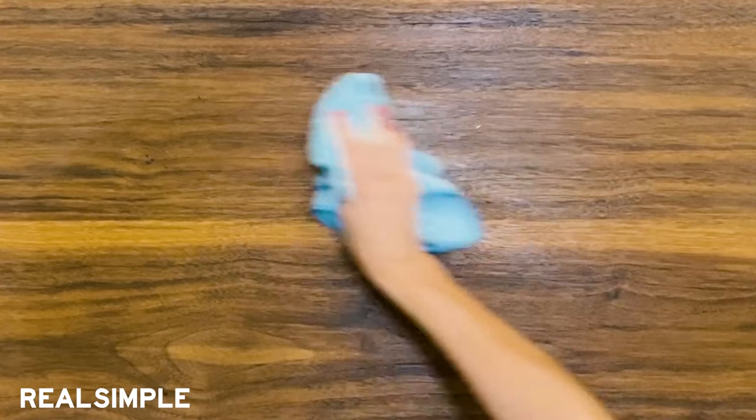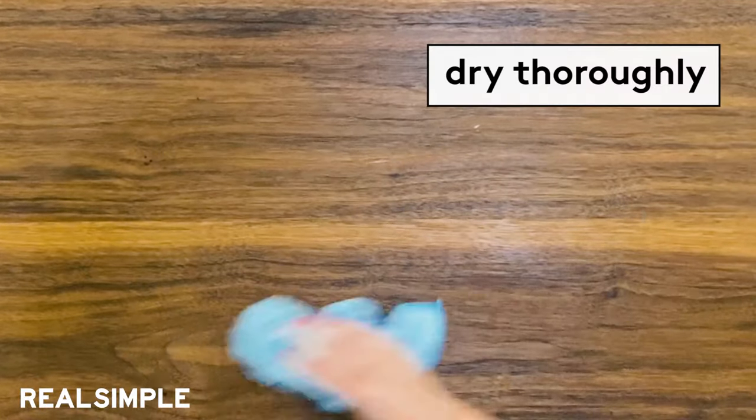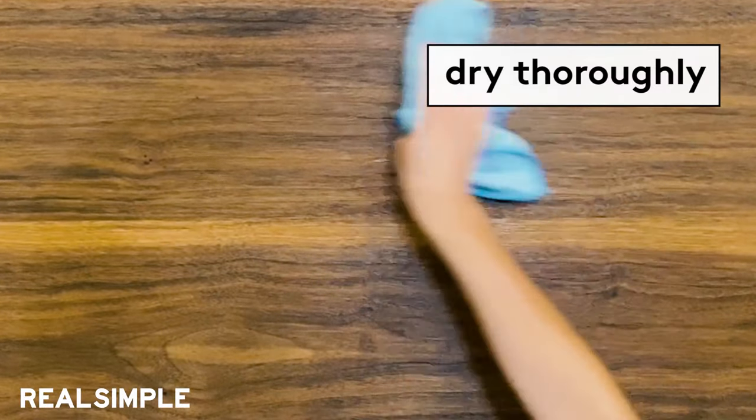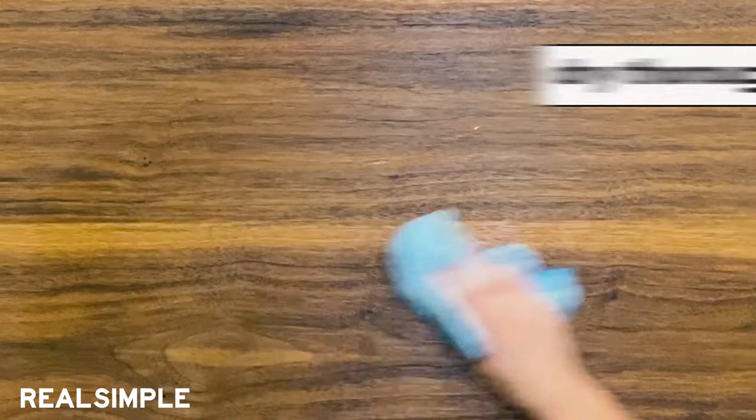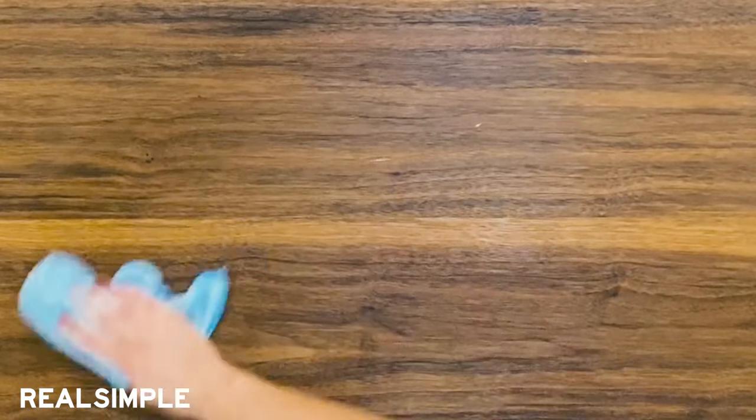Using a second clean dry microfiber cloth, you want to completely dry the surface. Because as you probably already know, if you've ever neglected to use coasters, leaving water on a wood surface will leave a mark.